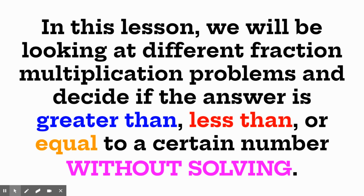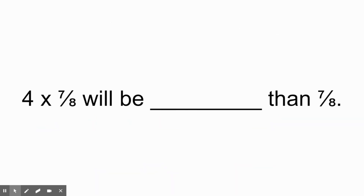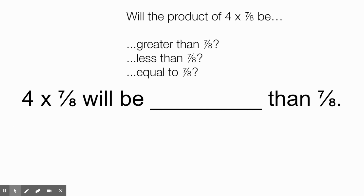Let's take a look at our first problem. It says: four times seven-eighths will be blank than seven-eighths. We're trying to figure out: will the product of four times seven-eighths be greater than seven-eighths? Is it going to be less than seven-eighths? Or is it going to be equal to seven-eighths? We've got three choices — go ahead and think about that.